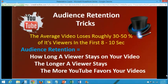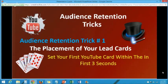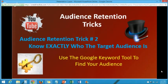Audience retention trick number one: the placement of your lead cards. You want to set your first lead card within the first three, maybe five, seconds of your video. Why? Because a viewer who is there and leaves within the first five to eight seconds — when the card slides out and they see there's an offer in the right-hand corner of the screen, they're distracted, their mouse stops moving, and they don't leave the video as quickly. They go to see exactly what the card was. Put your blog there. The first trick is to distract the person from leaving by using the placement of a lead card within three seconds.